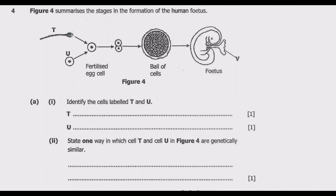Let us look at Question 4. Figure 4 summarizes the stages in the formation of the human fetus. So T and U combine to fertilize an egg — the fertilized egg that is formed. After this, a ball of cells is formed, then we have the fetus. Question 1: identify the cells labeled T and U.